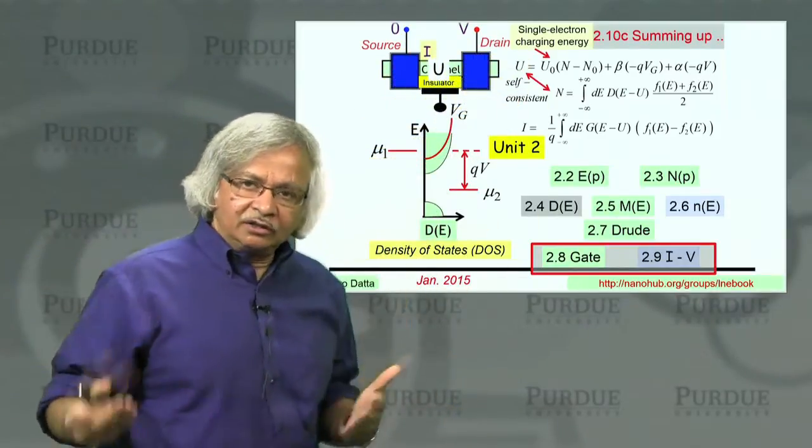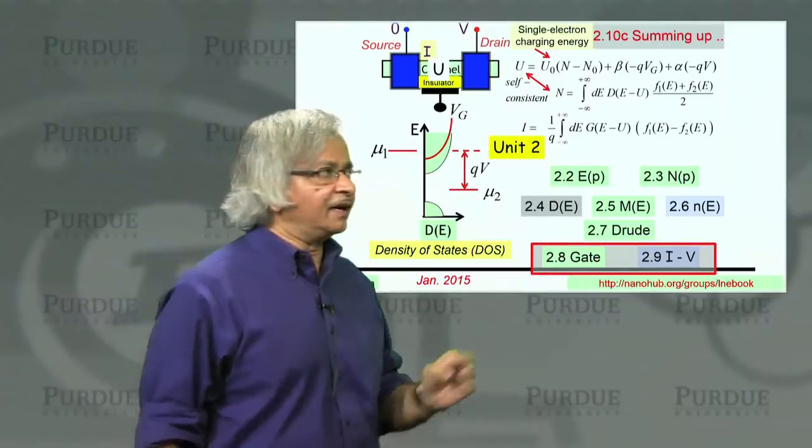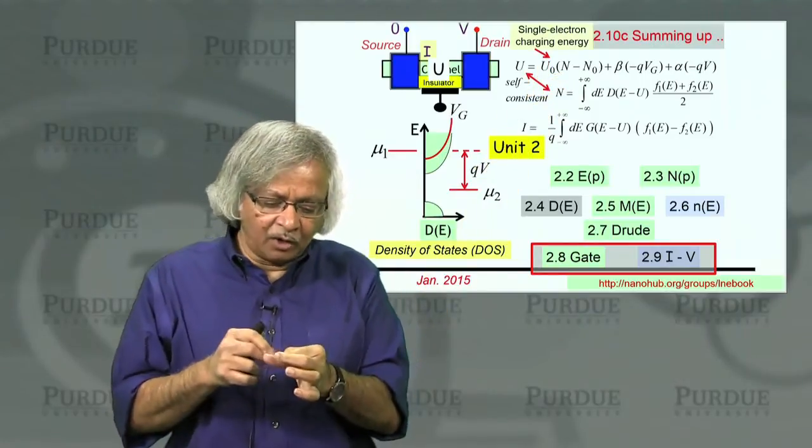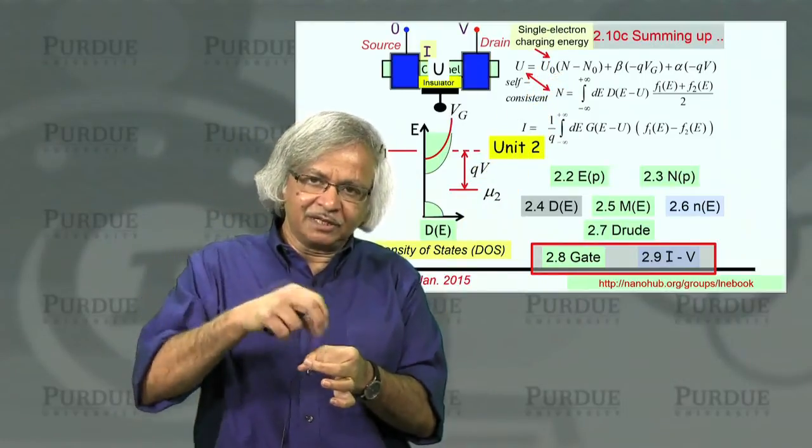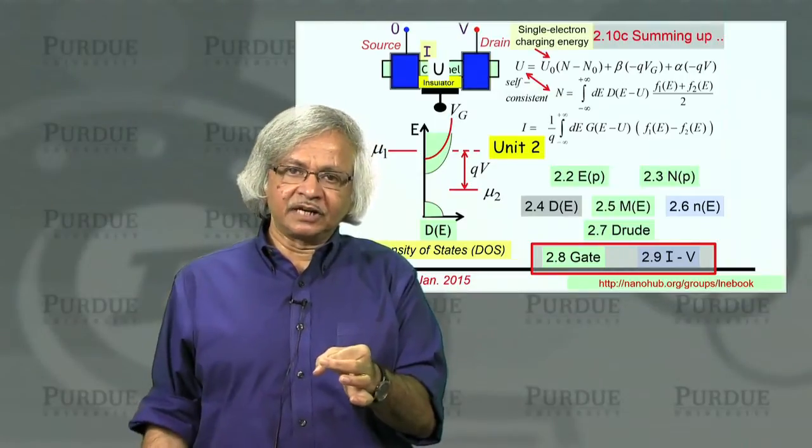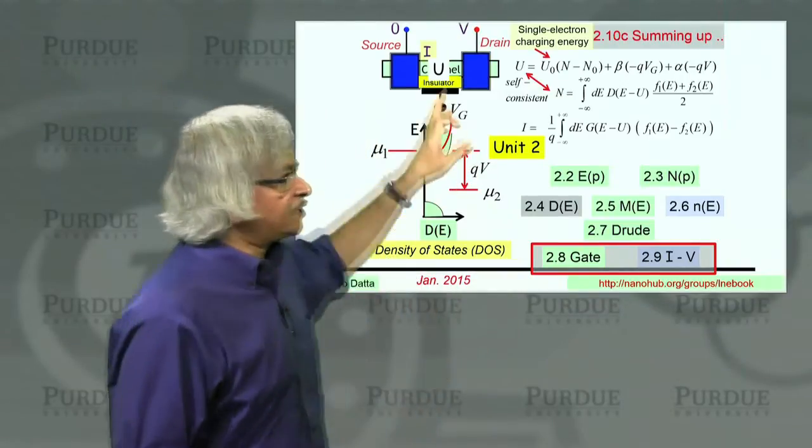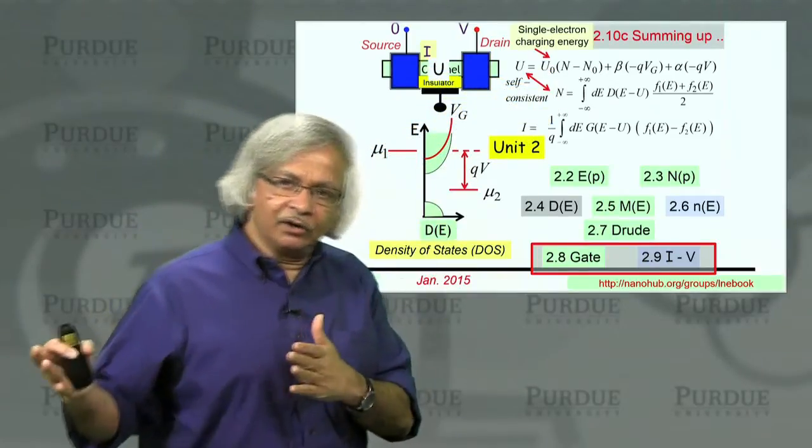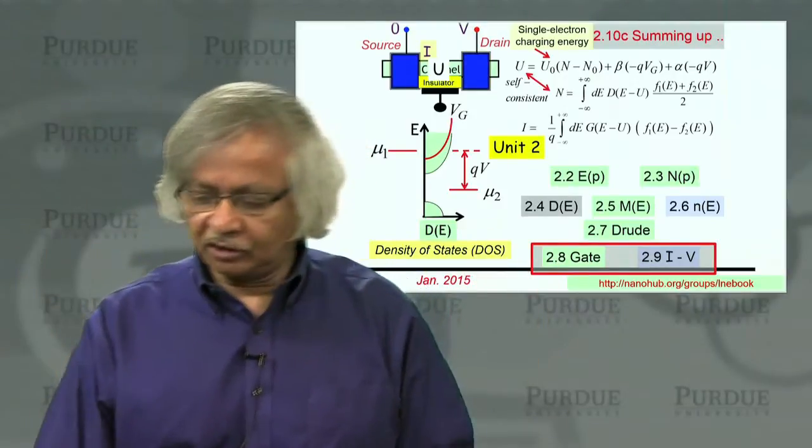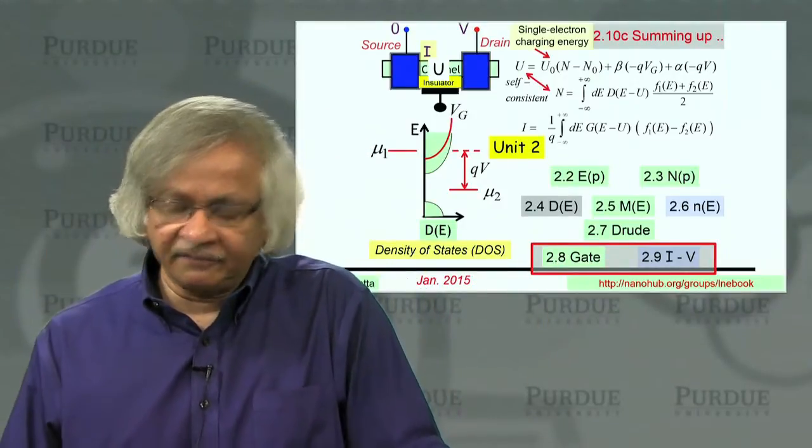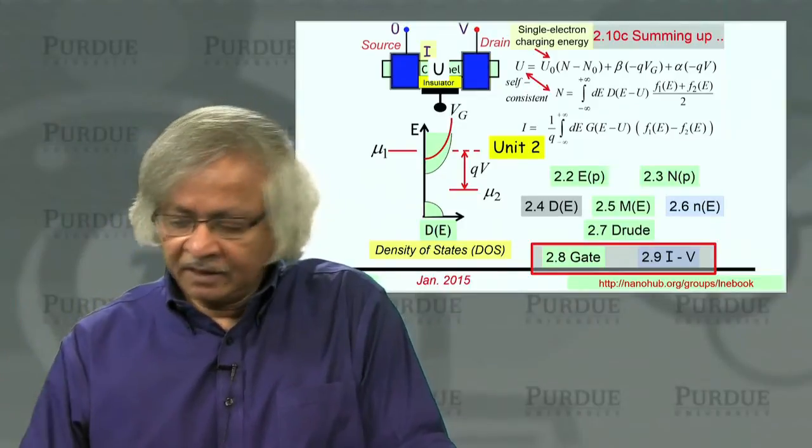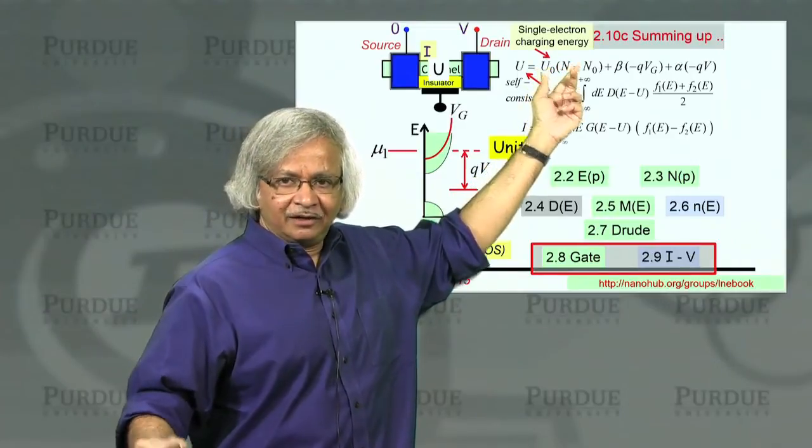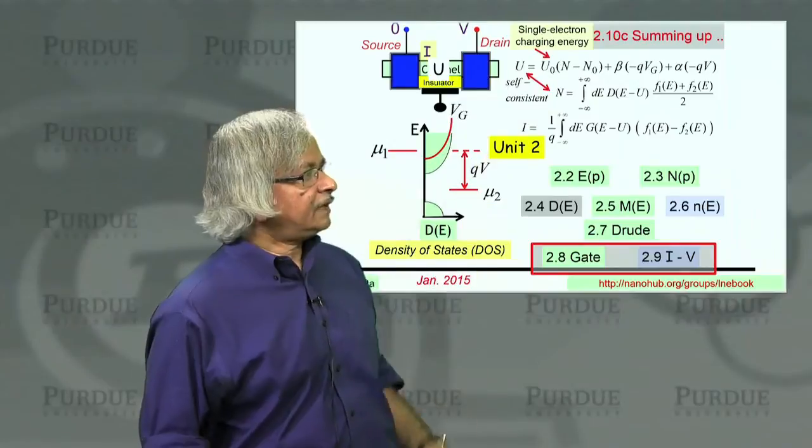On the other hand, nowadays, there are small devices, very small devices, where the single electron charging energy itself can be pretty big. As a device gets small, of course, one electron makes a much bigger difference in terms of what its potential is. And so the potential energy could be significantly affected and this could be big. And that leads to a whole new class of phenomena that we haven't even talked about. These are what are called the single electron charging effects or Coulomb blockade. Those are important when this U0 is a relatively large number, on the order of KT or more.